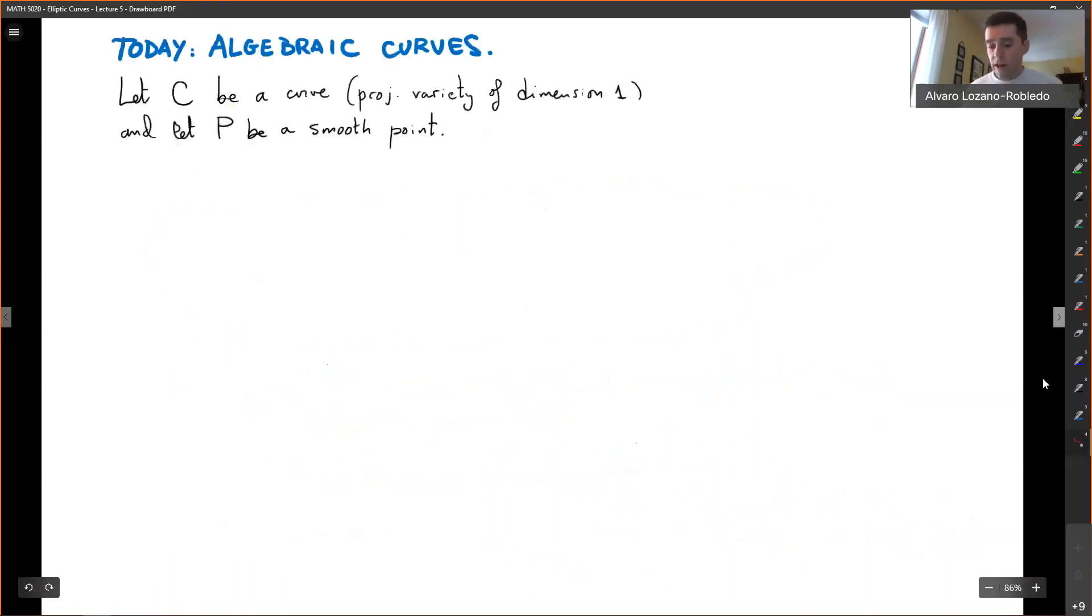All right. So today we're going to now concentrate on algebraic curves, projective varieties of dimension one. And we are going to start talking about divisors. For that, I need to know what our order of vanishing of functions. So we're going to define here, definition of function.